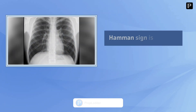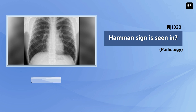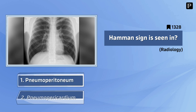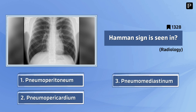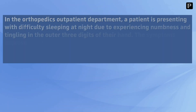Question 4: Humann sinus is seen in? Your options are: pneumoperitoneum, pneumopericardium, pneumomediastinum, hydropneumothorax. And the correct answer is pneumomediastinum.